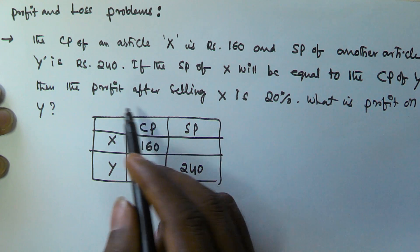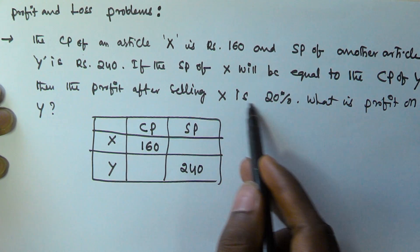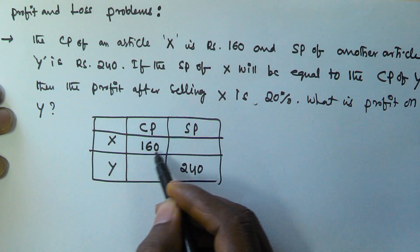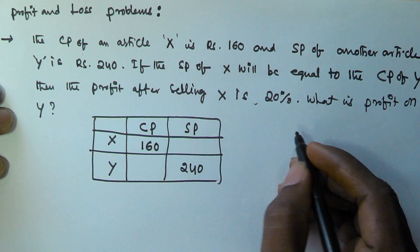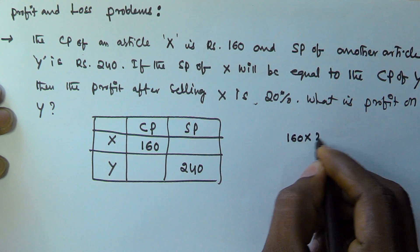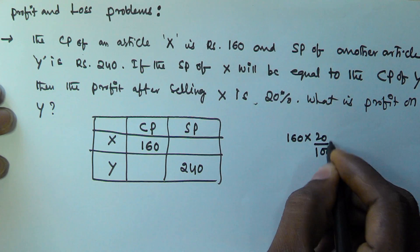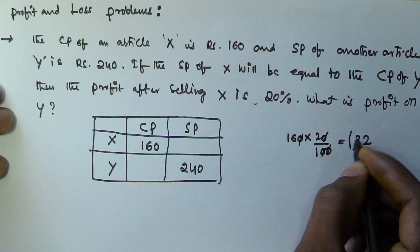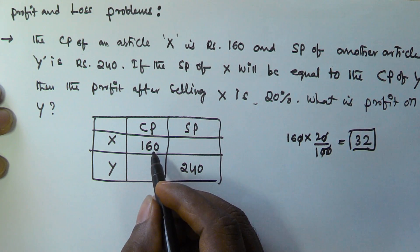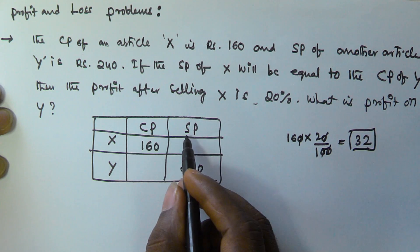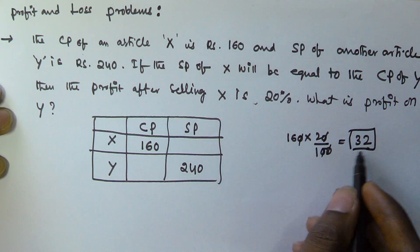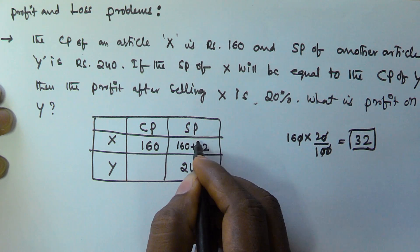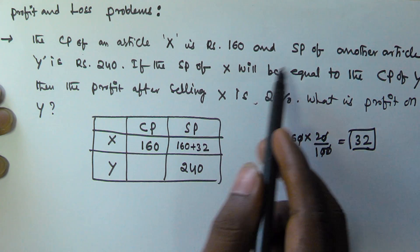It is also given that by selling X, he is getting 20 percent profit. So he is getting 20 percent profit on 160. That is 160 × 20 / 100, which equals 32 rupees profit. So the selling price of X is 160 + 32 = 192 rupees.